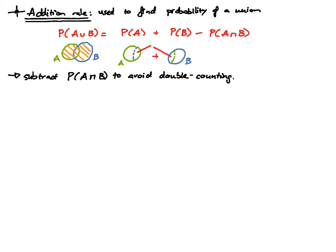Because we included the intersection in both terms, we have double counted the intersection. Since we have double counted it, we want to subtract it once from our equation, and that leads us to this formula.